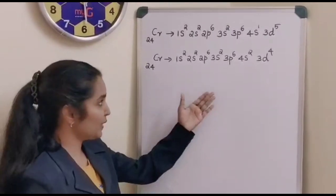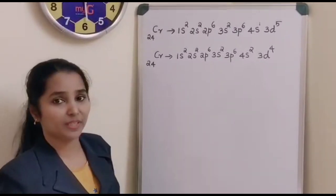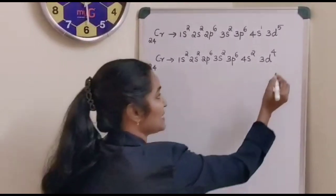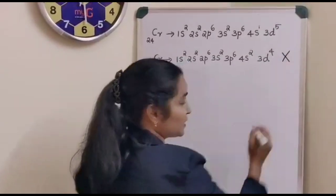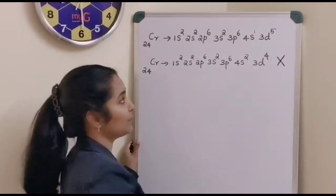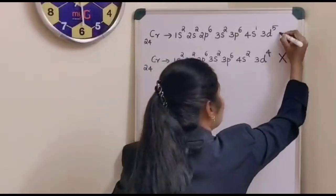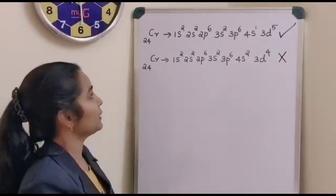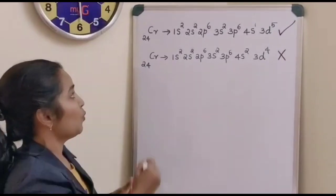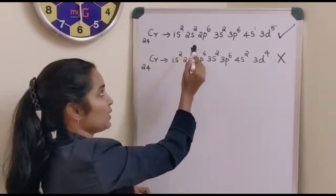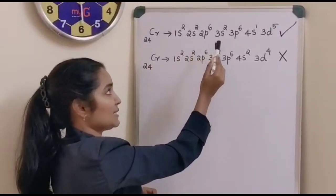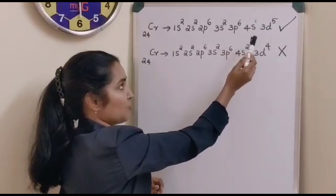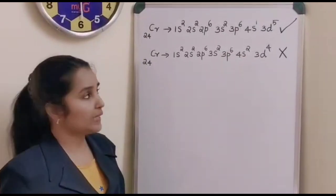That should be the electronic configuration of chromium. But that is not the observed electronic configuration. Instead, the actual electronic configuration of chromium is: 1s2, 2s2, 2p6, 3s2, 3p6, 4s1 and 3d5.